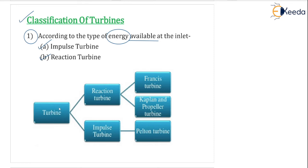From the diagram, turbines are classified into impulse turbines and reaction turbines. The Pelton turbine is an example of an impulse turbine. The Francis turbine and Kaplan and propeller turbines come under the reaction turbine category. So of the three main turbines we have mentioned, Kaplan and Francis are reaction turbines, while Pelton is an impulse turbine.